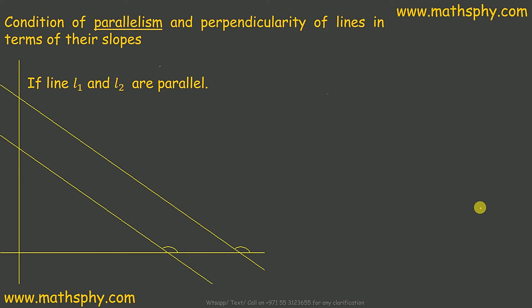In the previous videos we talked about slope of a line, and then we discussed what is the slope of the line if theta is acute and what is the slope of the line when theta is obtuse. Now in this video we're going to talk about what is the condition of slopes when we have two lines that are parallel to each other.